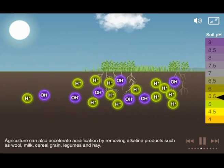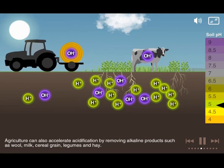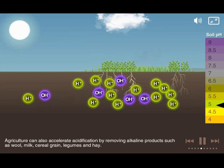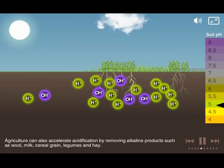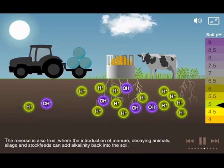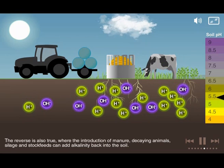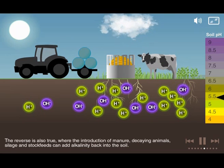Agriculture can also accelerate acidification by removing alkaline products such as wool, milk, cereal grain, legumes and hay. The reverse is also true, where the introduction of manure, decaying animals, silage and stock feeds can add alkalinity back into the soil.